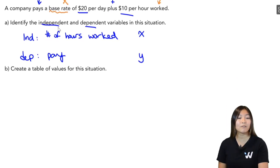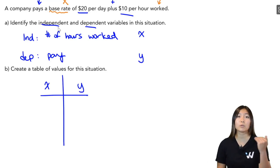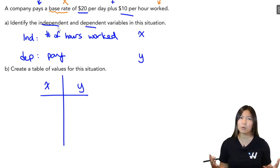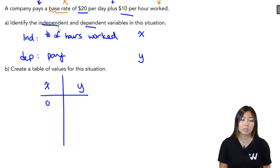In part B, we want to create a table of values for the situation. So I'm going to have my X and my Y, my independent and my dependent variable. Now I want to fill out values. Remember, independent variables, those are the numbers that we pick. Well, X represents the number of hours. First of all, can I have negative number of hours? No. Number of hours starts at zero and it can only go up. So I'm actually going to pick my first one to be zero.